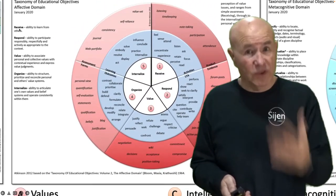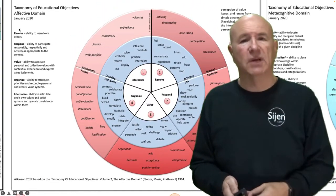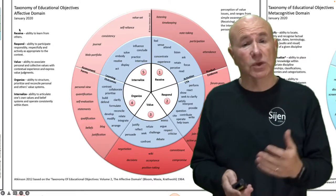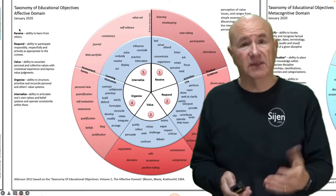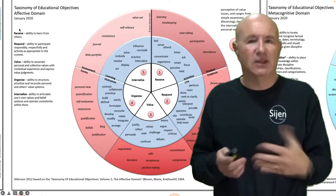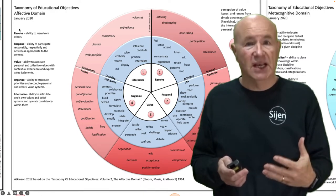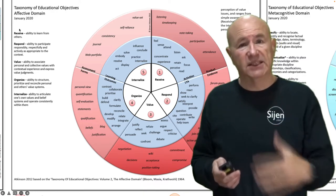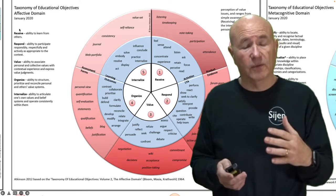One part of the original work done by Bloom in the late 1950s and early 60s was an affective domain, which is about people's value structures. That again is represented in its circular form.